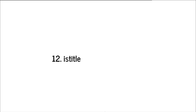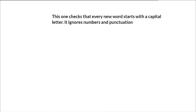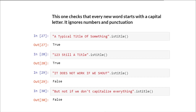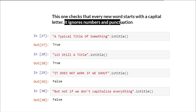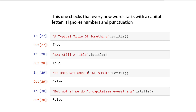Then we have istitle, which checks that every new word starts with a capital letter, and it ignores numbers and punctuations. For example, this string is in title case — you can see that T, T, O, and S all start with capital letters. A string with numbers and punctuation is also considered a title since those are ignored. But a string where everything is uppercase, or only one letter is uppercase while the rest are lowercase, is not in title case.